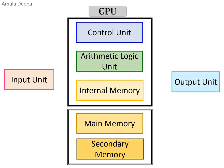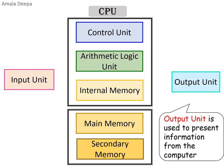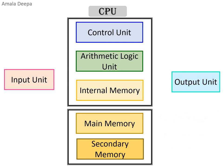Output unit is used to present information from the computer. I will now show you the path by which data flows with a solid red line, and the flow of control with a dotted blue line.